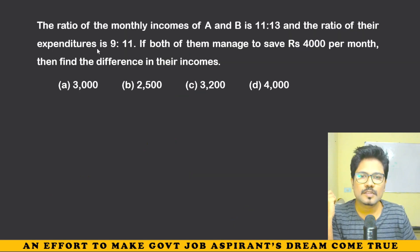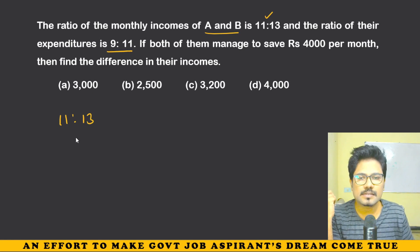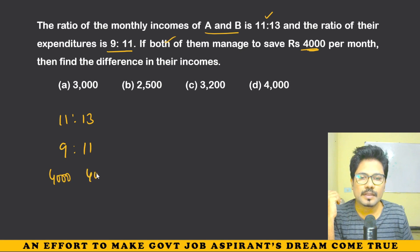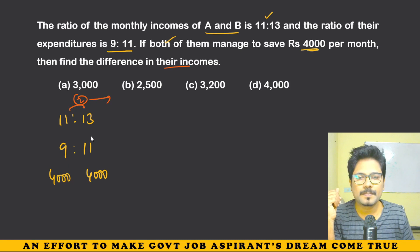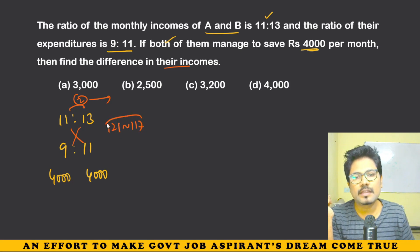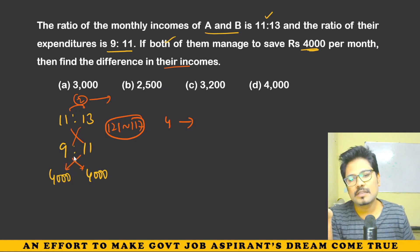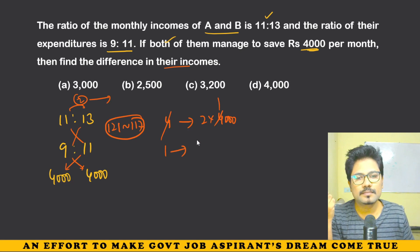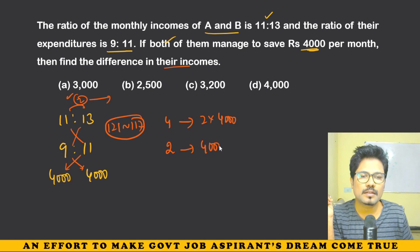Final question: Ratio of monthly incomes of A and B is 11:13. Ratio of their expenditure is 9:11. Both manage to save 4,000 per month. Using the crisscross method: 13×9 = 117 and 11×11 = 121. Difference is 4 units = 4,000 per month savings. The income difference is 2 units. 1 unit = 2,000 but income difference = 2 units × 2,000 = 4,000. The answer is 4,000.